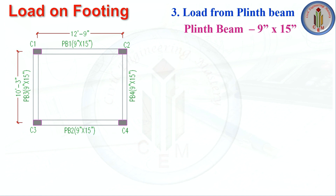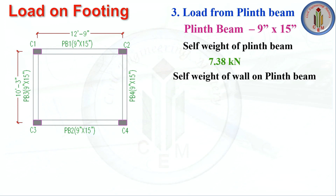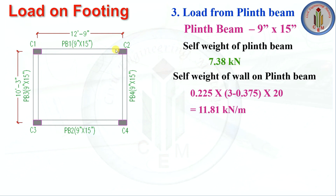Next is the load from the plinth beam. Plinth beam size is 9 inches by 15 inches — same as the roof beam — so its self-weight load to C1 is also 7.38 kN. We also need to calculate the self-weight of the wall on the plinth beam: wall thickness 0.225 m × (floor height 3 m − beam depth 0.375 m) × unit weight of brick 20 kN/m³ = 11.81 kN/m. This wall load acts on both adjacent spans.